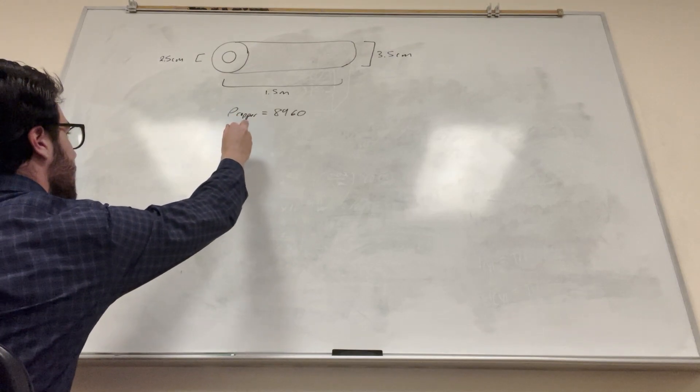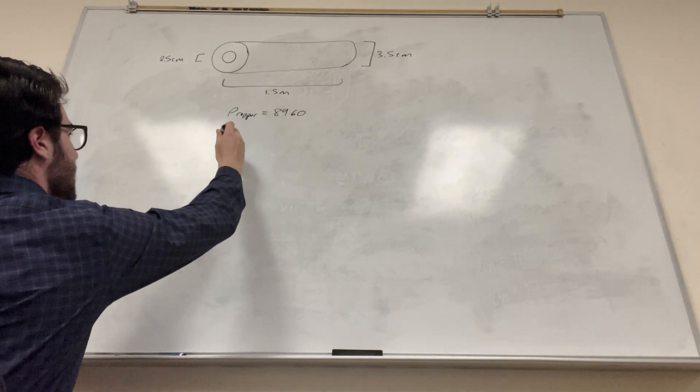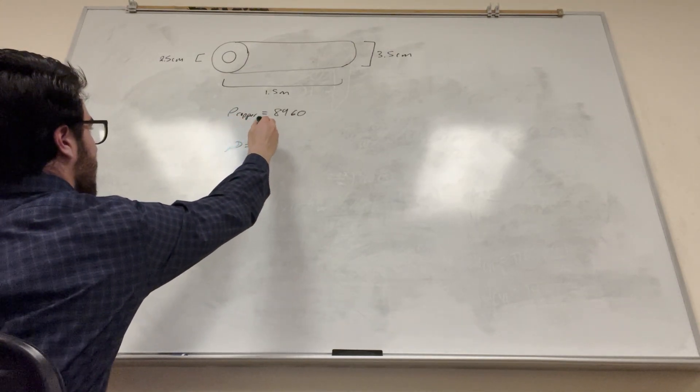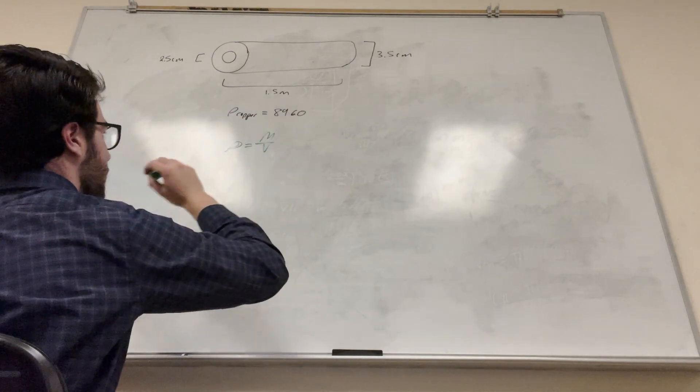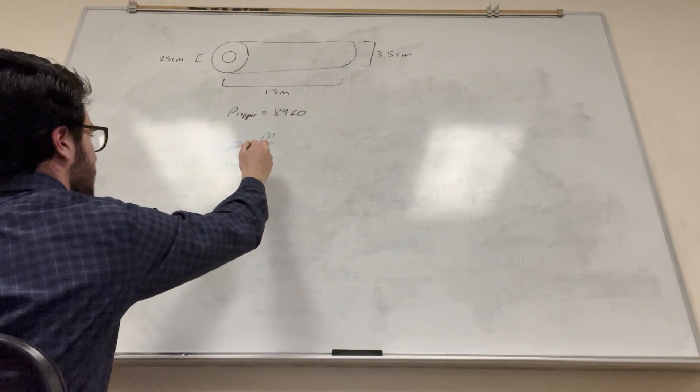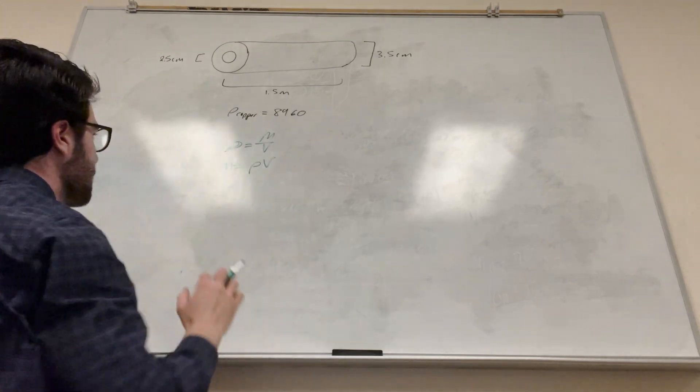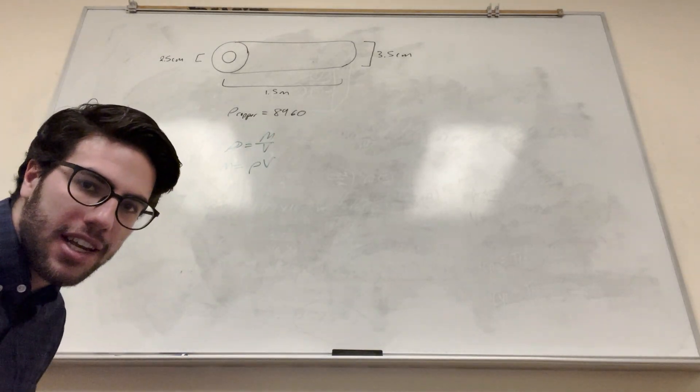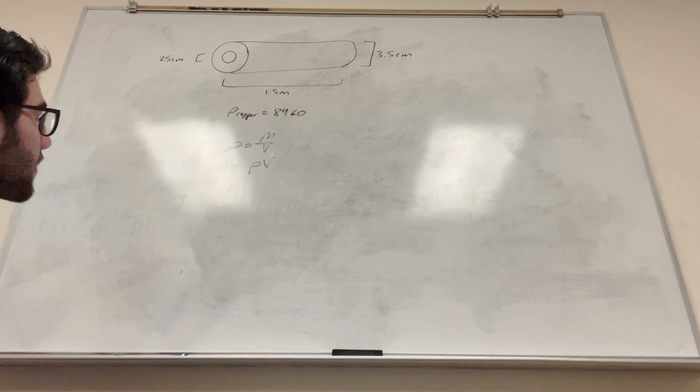So we know that density is equal to mass divided by volume. So we're trying to find mass, so we can say mass is equal to density times volume. Perfect. Alright, so we know the density, we need to find the volume. So let's find the volume.